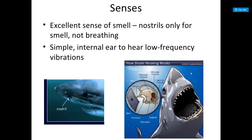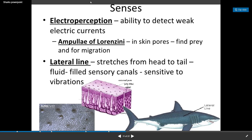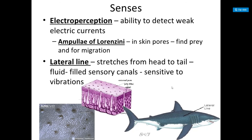Senses: they have an excellent sense of smell — their nostrils are only for smell, not for breathing. They have simple internal ears to hear low-frequency vibrations. They also have electroreception, the ability to detect weak electrical currents, using ampullae of Lorenzini — skin pores used to find prey and for migration.